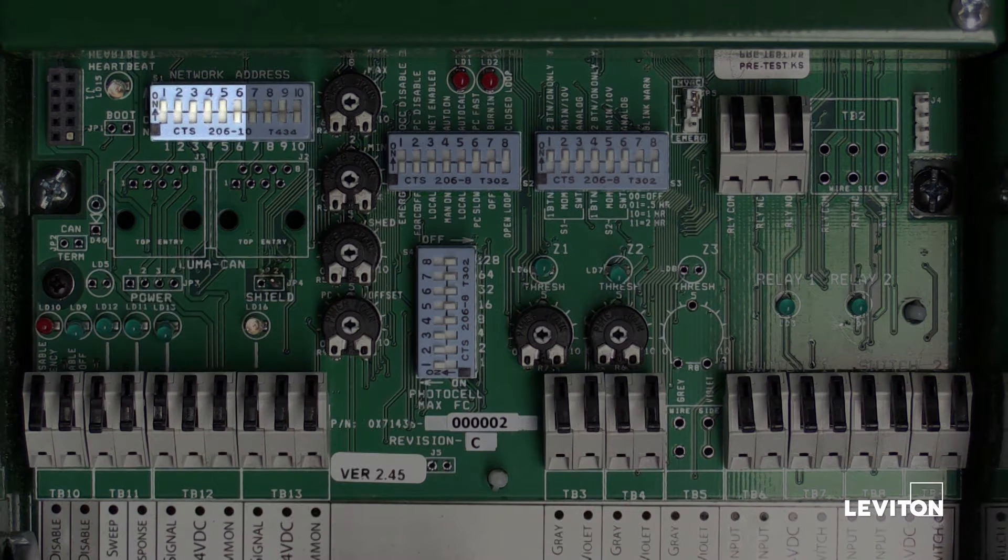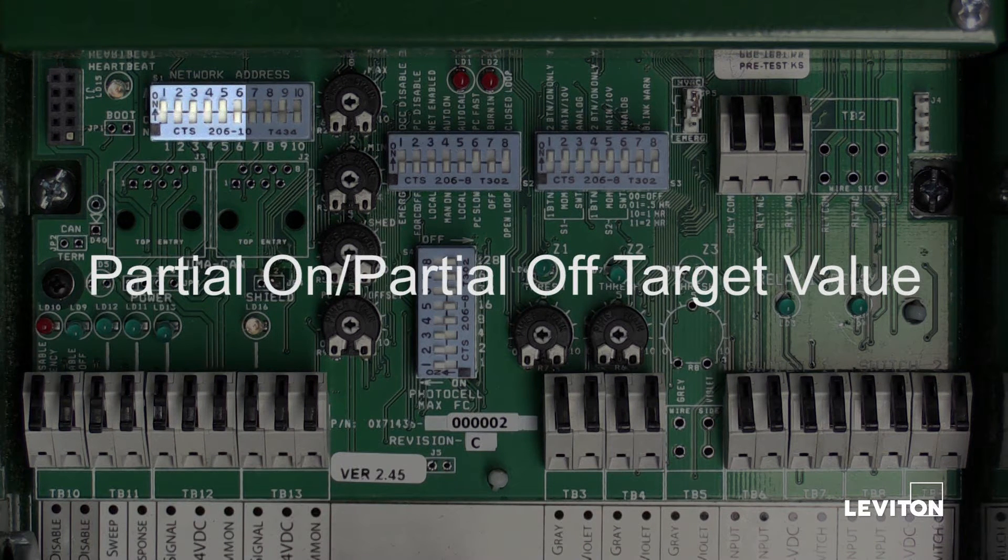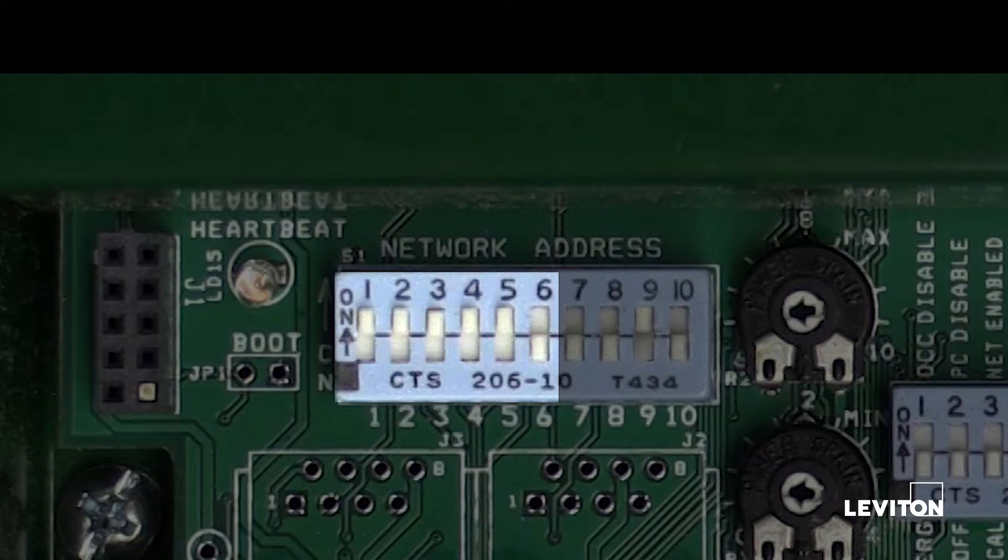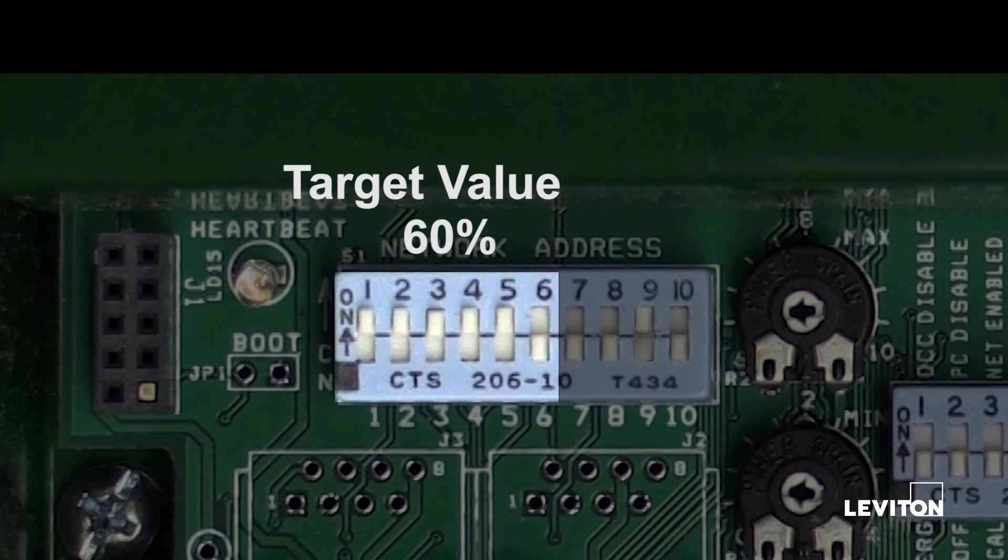Dipswitches 1-6 are used to calculate the partial on or partial off target value associated with the occupancy sensor. Each dipswitch in the on position adds a value of 10% to the total count with a maximum value of 60%.